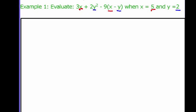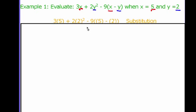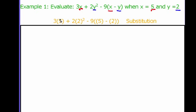I'm going to make sure that those go in parentheses. So when I substitute, I get 3 times 5 plus 2 times 2 squared minus 9 times the quantity 5 minus 2. All I did is substitute in my values.